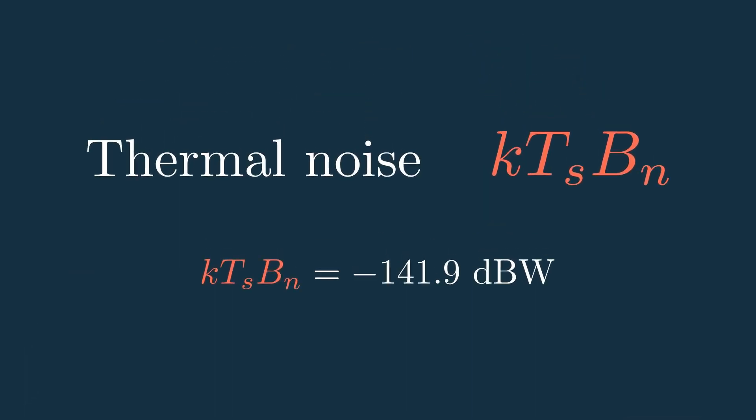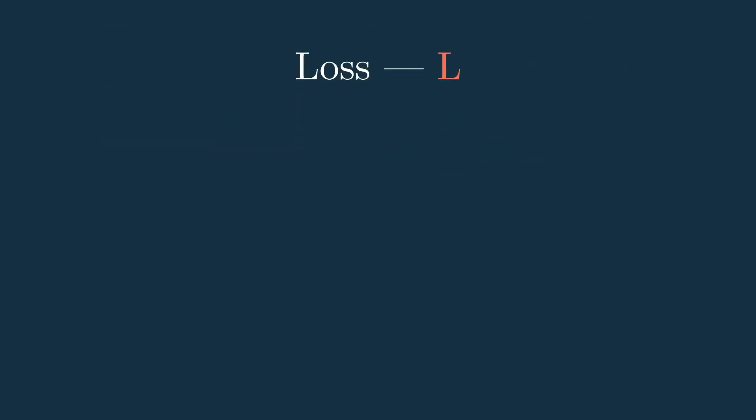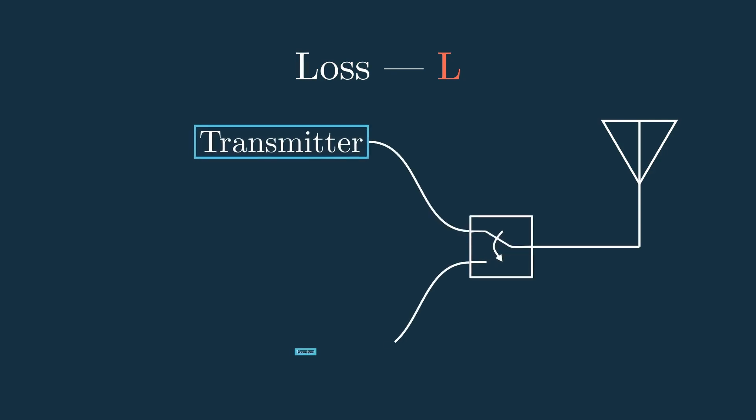But once you receive the signal, it still has to go through all the receiver's electronics, which aren't perfect and will each add some noise or loss. For example, coming into the receiver, the signal might first go through a switch to choose between the transmit and receive paths.